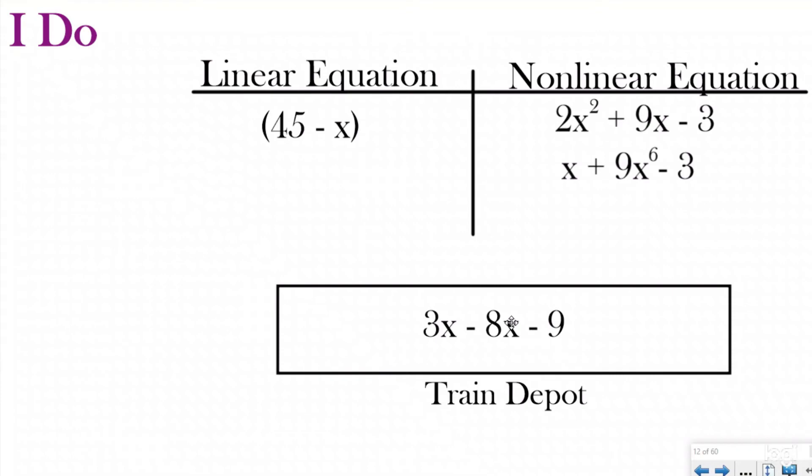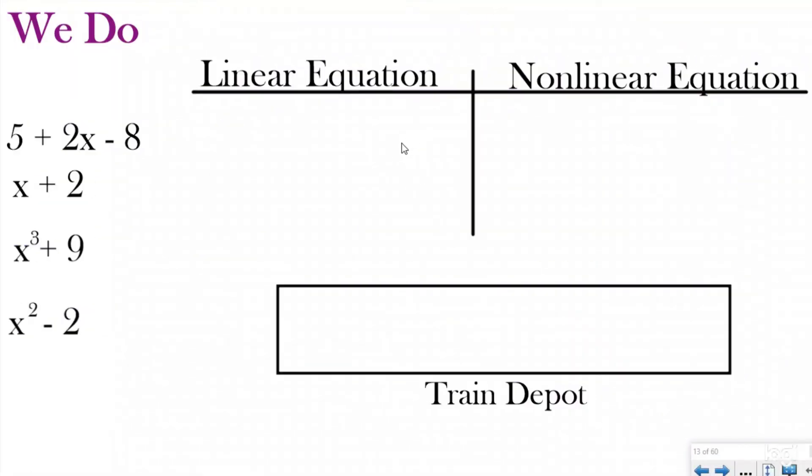I don't see any exponents in my linear expression, which makes this a linear equation. For our We Do, if you're ready to try this by yourself, go ahead and write down these four in your notebook, make your little T-chart right here, and try to separate them or categorize them correctly. Push play and we'll see how you did. If you're not ready, don't worry, we can do it together.